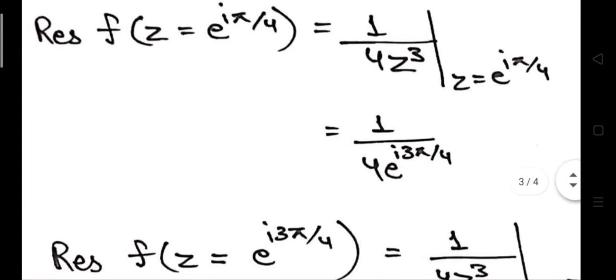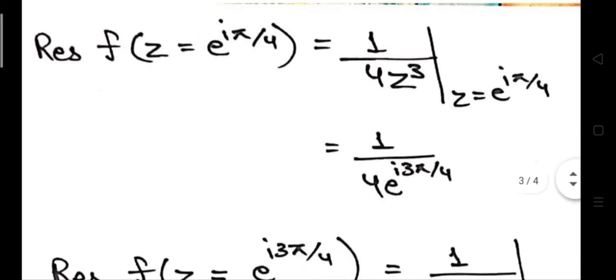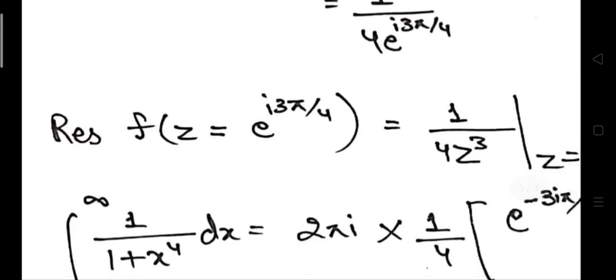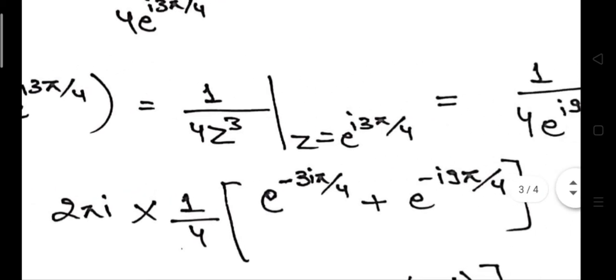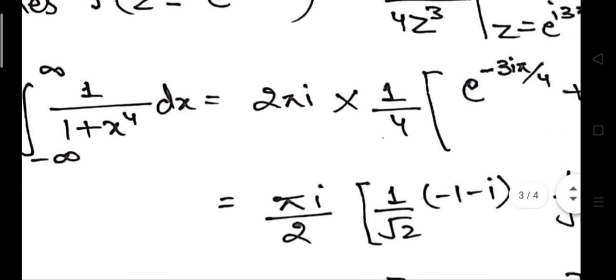The next step is to find the residue at those two poles. The order of the pole is one — these are first-order poles. Using the formula for a first-order pole residue: keep the numerator as it is, find the first-order derivative of the denominator, then substitute the pole value into the expression. This is applied to find the residue at e to the power iota pi by 4, and similarly at e to the power iota 3pi by 4.